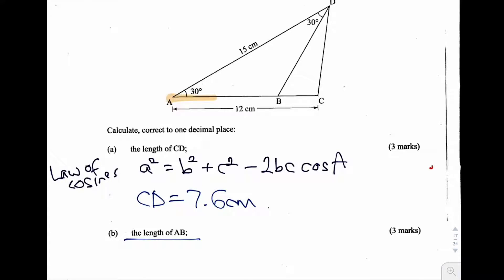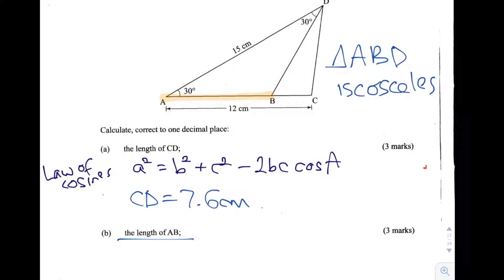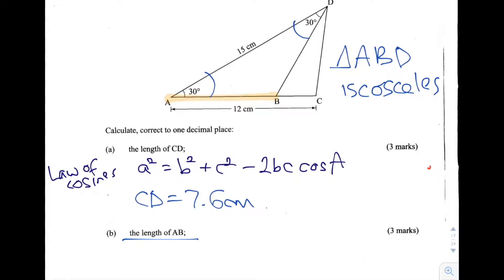AB is this length here which I've highlighted in orange. As I discussed previously, the triangle ABD is an isosceles triangle. This means it has two angles which are equal in length—these two which are both 30 degrees—and also two equal sides. We're going to solve this in two parts.